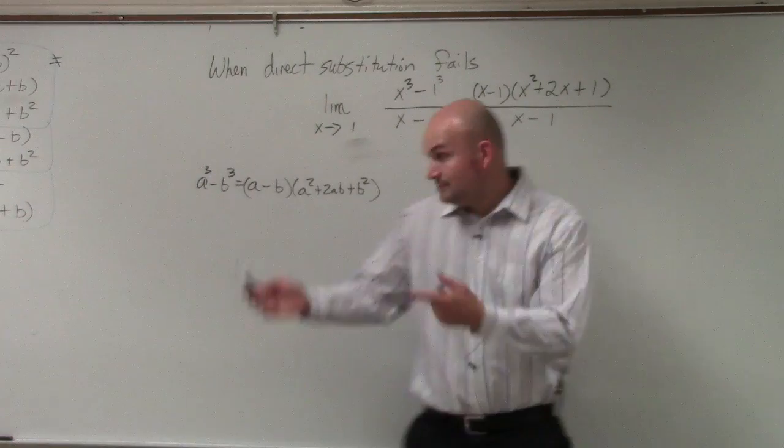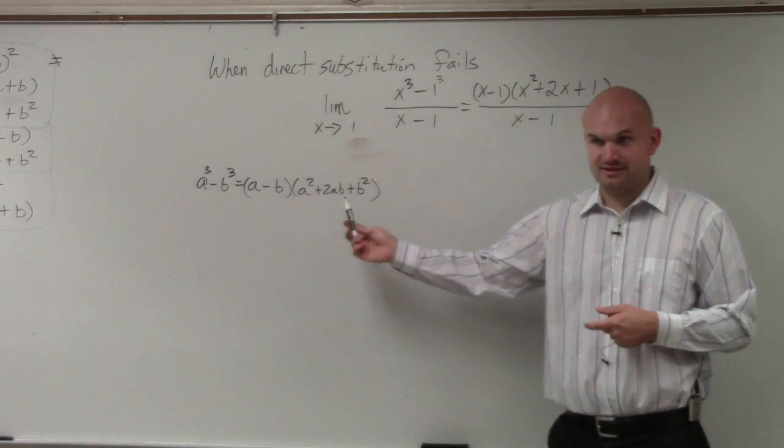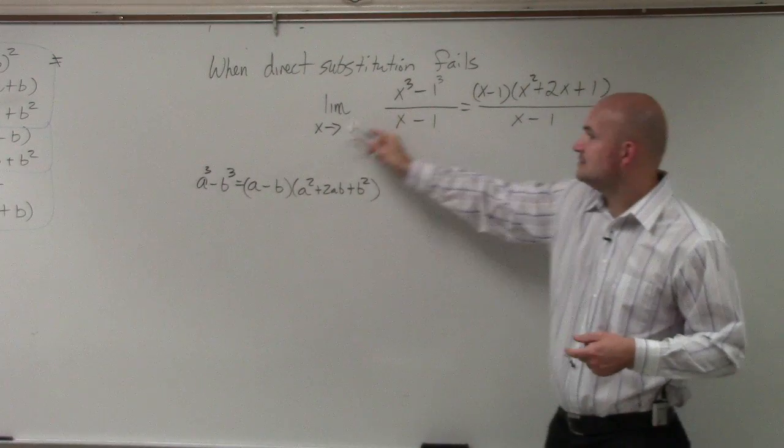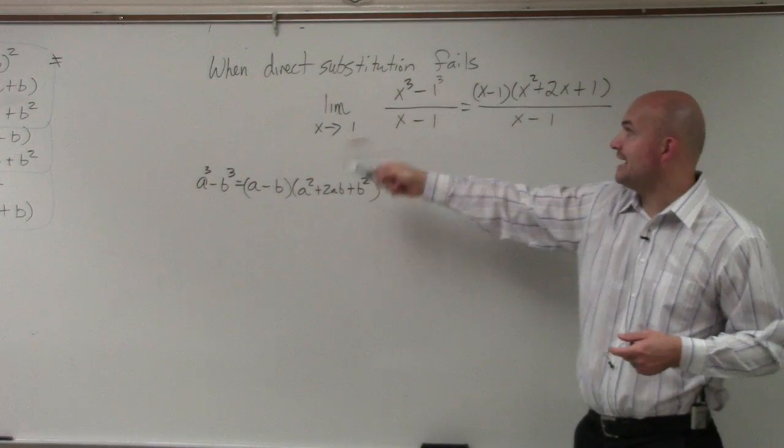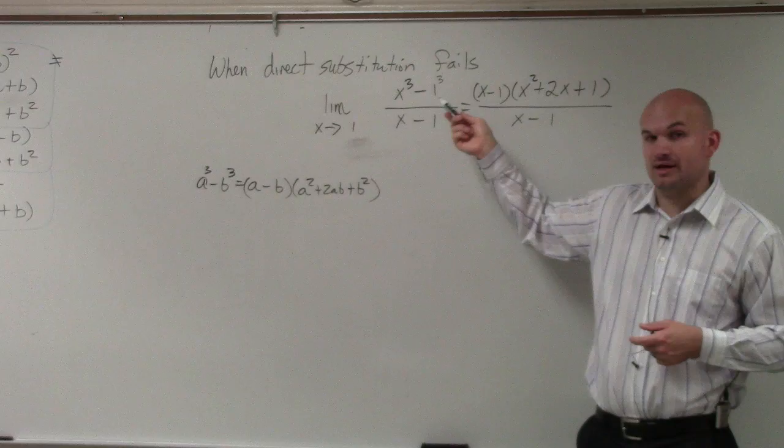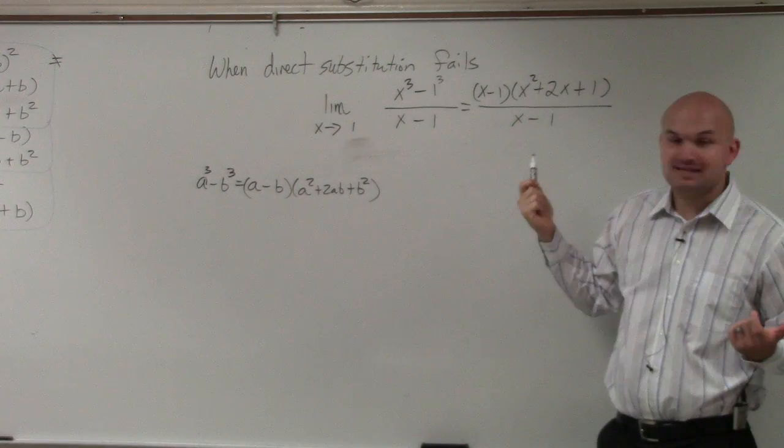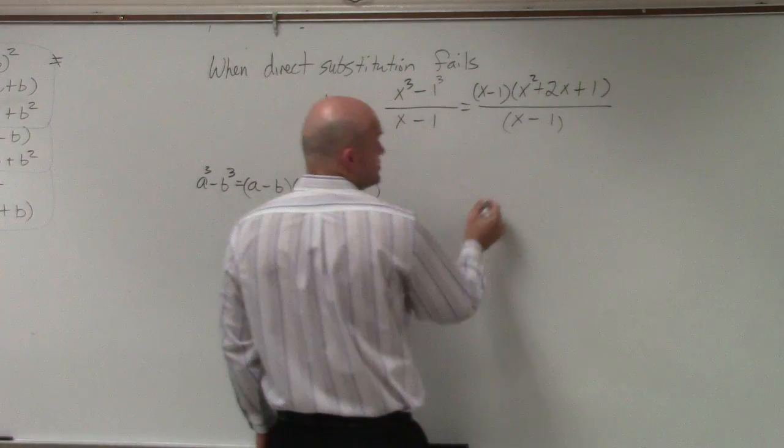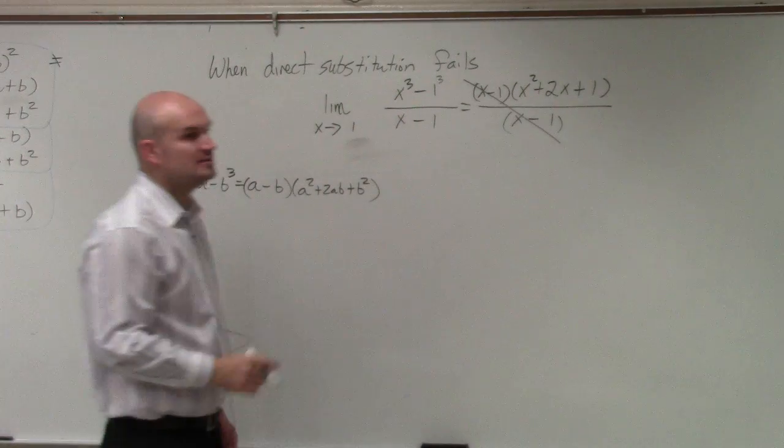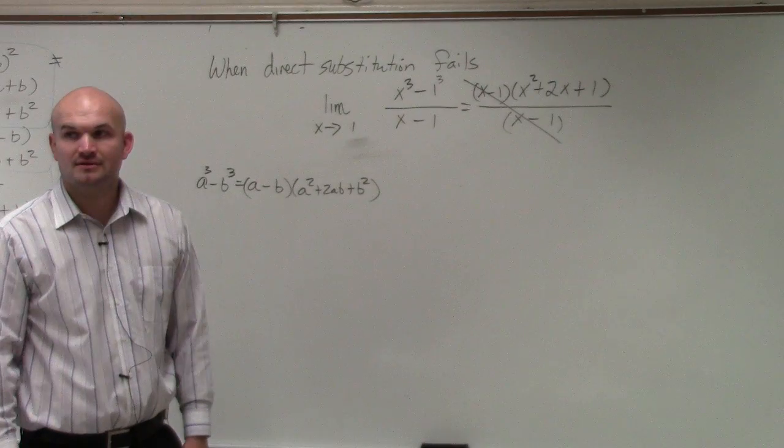So by using this factoring technique and using a to be x and b to be 1, I just factored out the rest of this. And what's nice about this is, again, you guys can see my division property divides those out, right?